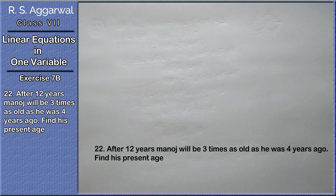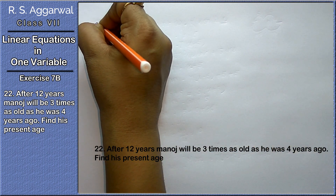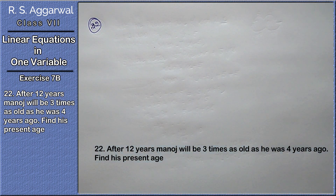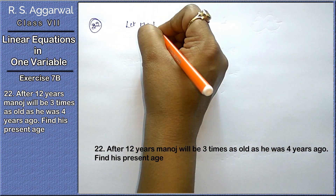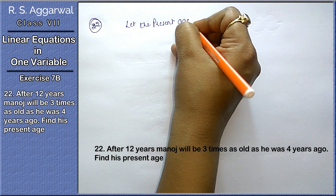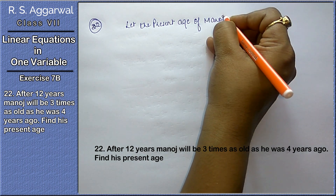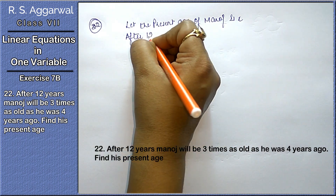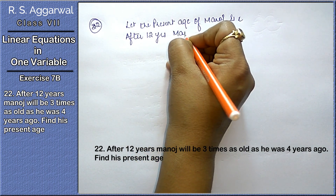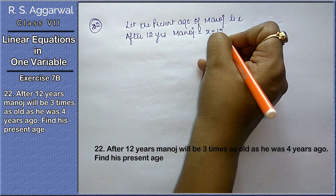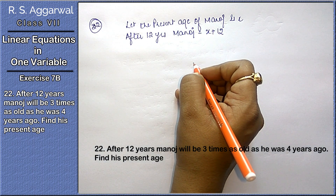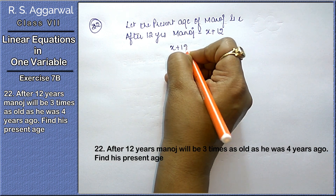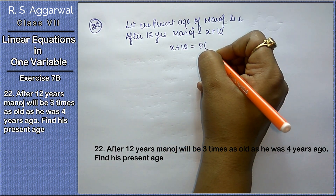Friends, let's do the next question. The 22nd question: after 12 years, Manoj will be 3 times as old as he was 4 years ago. Let the present age of Manoj be x. After 12 years, Manoj will be 3 times as he was 4 years ago.